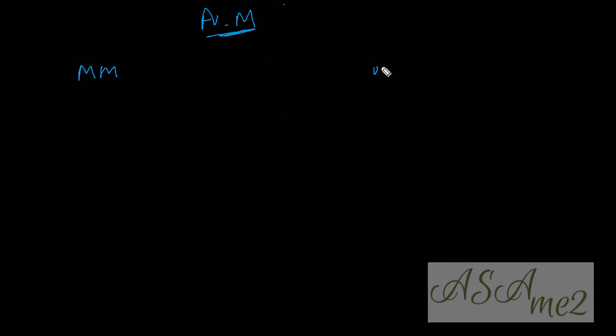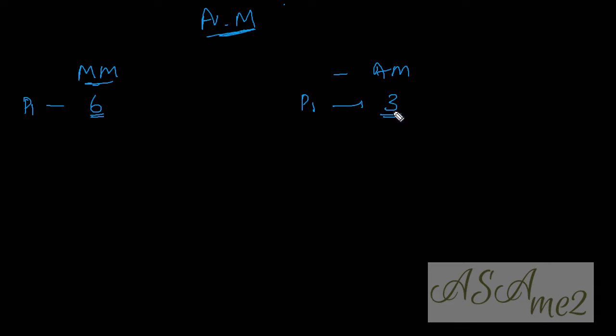Let's see a high-level overview of the difference between aggressive mode and main mode. In main mode, to complete phase one, it requires six packets to be exchanged. In aggressive mode, to complete phase one, it only requires three packets to be exchanged between the initiator and responder. Aggressive mode does the same thing that main mode does — it brings phase one up.